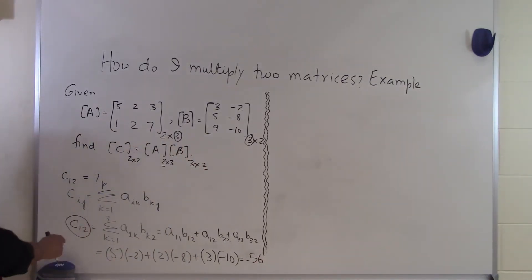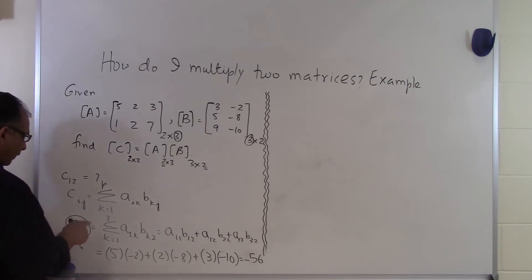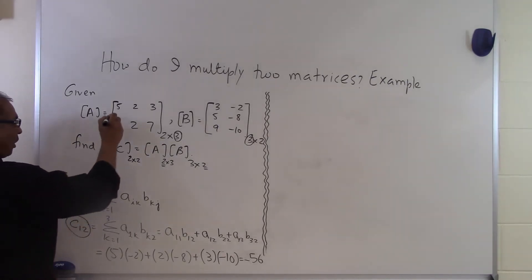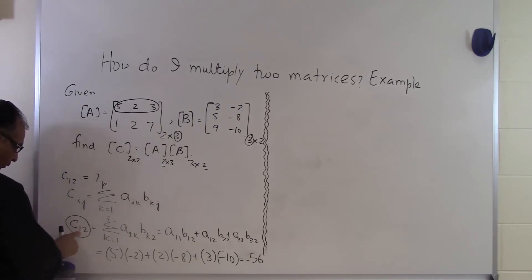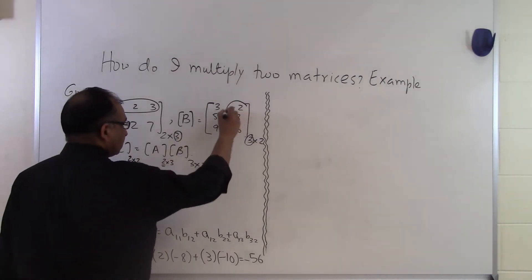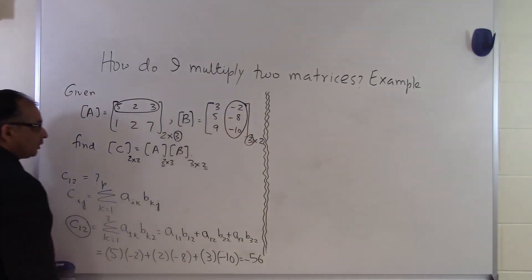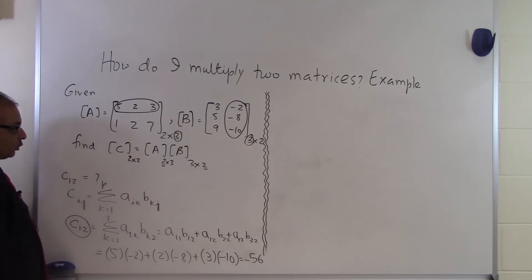Now what I also wanted to tell you is that C₁₂ can also be viewed, which is exactly the same thing, as finding the dot product of this vector because it is C₁₂. So I take the first row of the first matrix and the second column of the second matrix and I find the dot product between those two vectors.